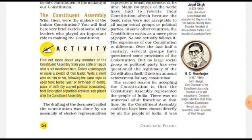The constitution documents enshrined the protection of minority castes and communities. This is the kind of property — the protective guarantee — found in the constitution's documents.